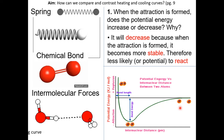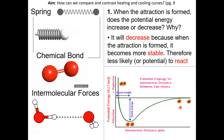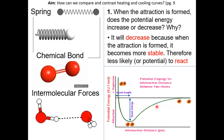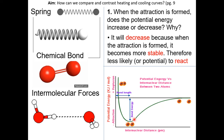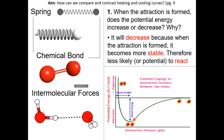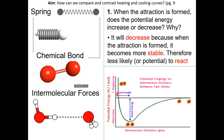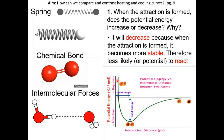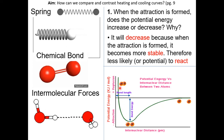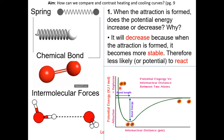You can see this in the graph. As the atoms come closer to each other, the potential energy decreases because they are becoming attracted to one another. But as they get too close, the potential energy increases because of repulsion — the electron clouds of each atom repel one another.